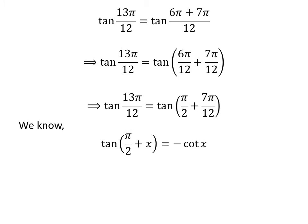We know the trigonometry identity: tangent of pi upon 2 plus x is equal to minus cotangent of x. The proof of this trigonometry identity is given in the video appearing in the upper right corner of this video, and the link of the video is also given in the description section.